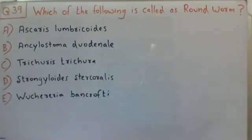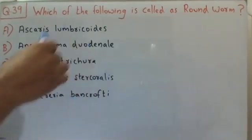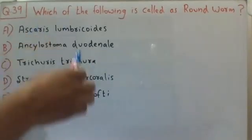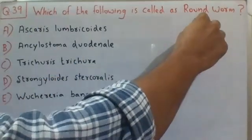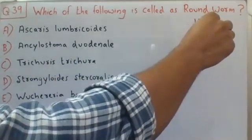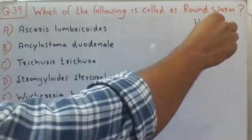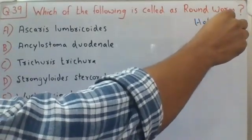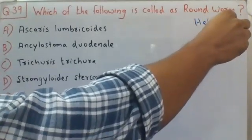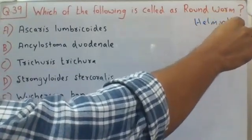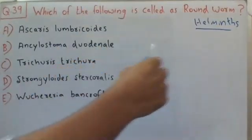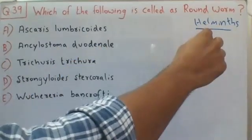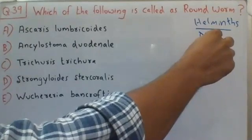Before coming to the correct choice, all these are parasitic worms, also called as helminths. All of these worms given in the choices belong to a phylum called nematodes.